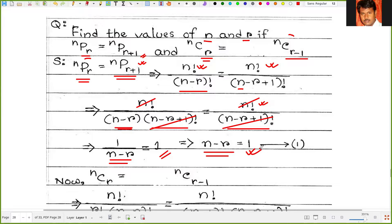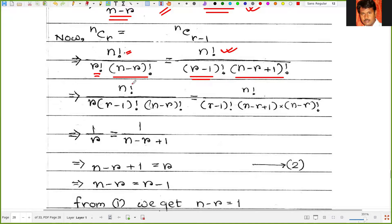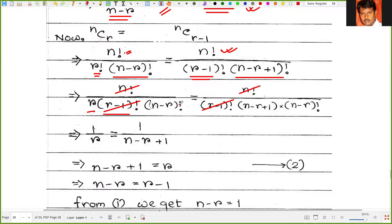For the second condition, nCr equals nC(r-1). Writing nCr as n factorial upon r factorial times (n minus r) factorial, and nC(r-1) as n factorial upon (r-1) factorial times (n minus r plus 1) factorial. We can cancel n factorial. Then r factorial is written as r times (r-1) factorial, so (r-1) factorial cancels. Also, (n minus r plus 1) factorial equals (n minus r plus 1) times (n minus r) factorial, so (n minus r) factorial cancels.